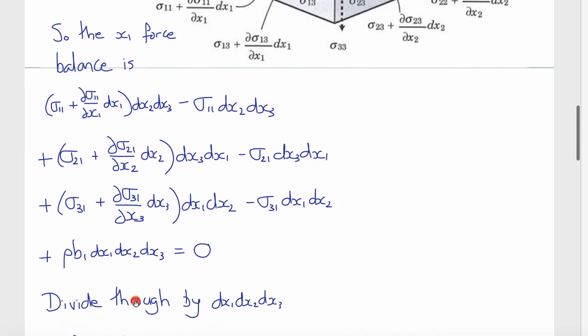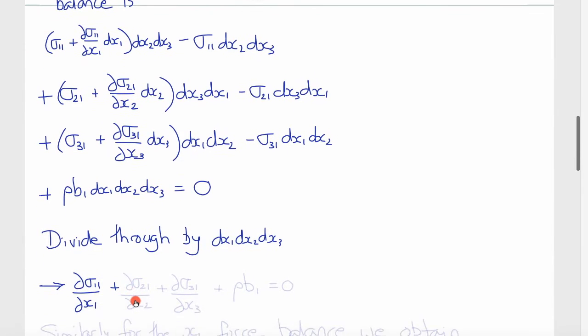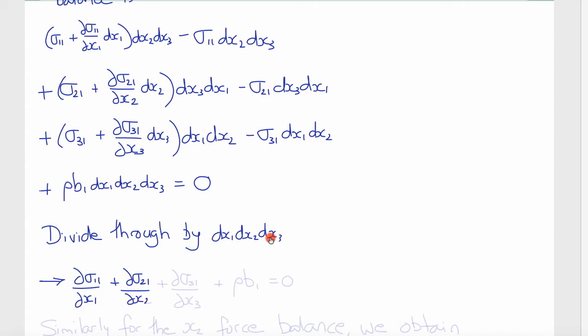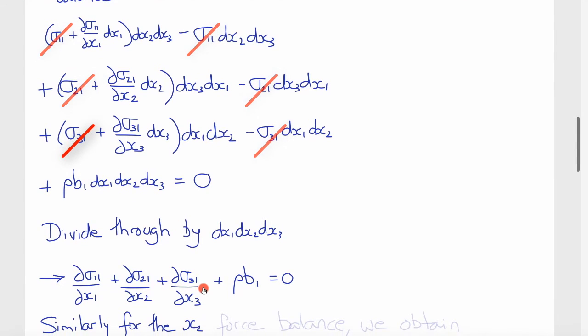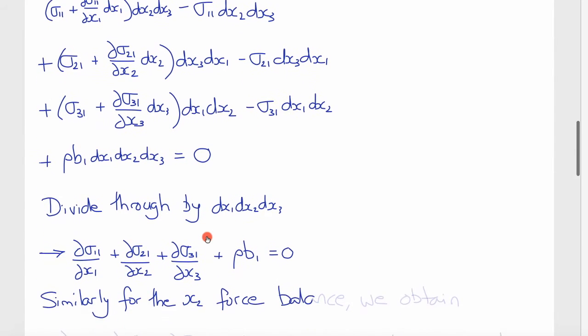And then finally, the shearing tractions on the three-face: σ31 plus ∂σ31/∂x3 dx3 times dx3 minus σ31 minus this term here. And then plus a component of the body force in that direction, which we would multiply by the volume, since this is body force per unit mass times mass per unit volume would give us body force per unit volume times volume, which would be force. Now if we divide this entire expression through by dx1 dx2 dx3, which is just the volume of that elemental parallelepiped, you can see that these terms here cancel with these ones here, and we're left with ∂σ11/∂x1 plus ∂σ21/∂x2 plus ∂σ31/∂x3 plus ρ times b1.